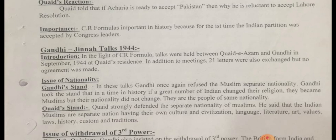The first issue that was discussed was the issue of nationality. Gandhi took the stand that even though a great number of Indians changed their religion and became Muslims, it does not change their nationality — they have the same nationality. On this, Quaid said that Muslims are a separate nation because they have their separate culture, civilization, language, literature, art, values, laws, history, customs, and traditions.